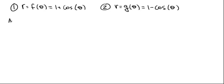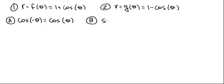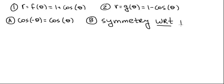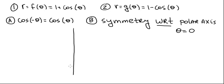We're going to need two results. The first result is the trig identity: cosine of minus theta equals cosine of theta. The second result, call it result B, is symmetry of a polar graph with respect to the polar axis, which is just the x-axis or in polar terminology the line theta equals 0. Let's see when a polar graph is symmetric with respect to the polar axis.